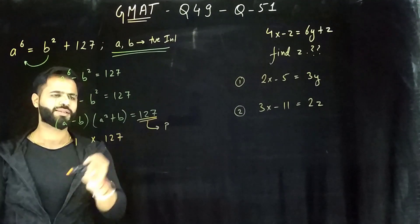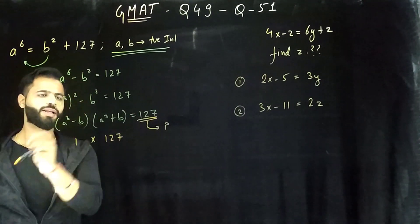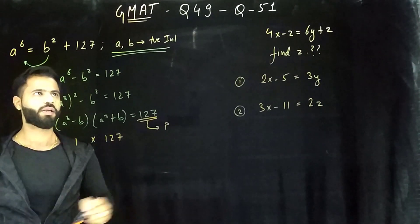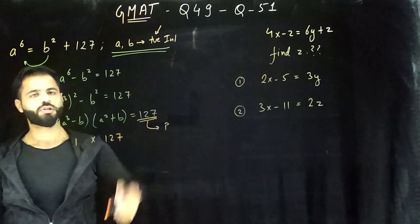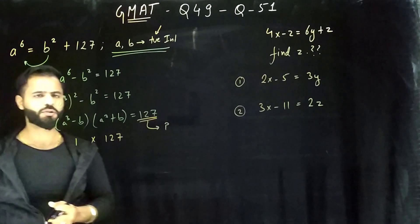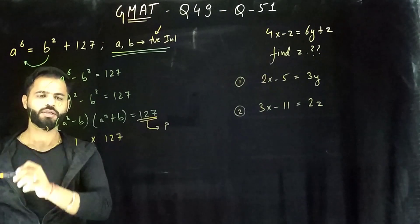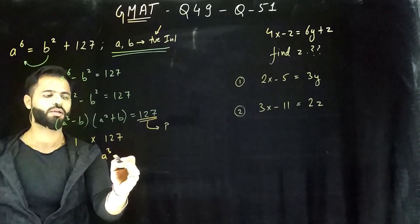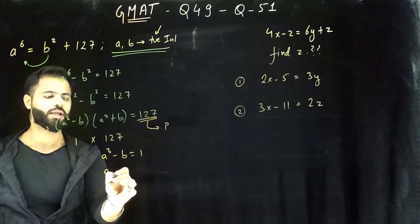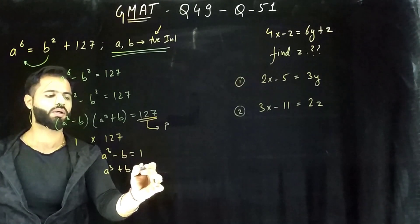This is a prime number which can only be formed in just one way, and that's 1 into 127. You may argue why this is not 1, but of course, a³ - b is going to be smaller than a³ + b, given that both are positive. Keep all these little things in your mind. It will help you a lot. Now I have two equations in just one equation.